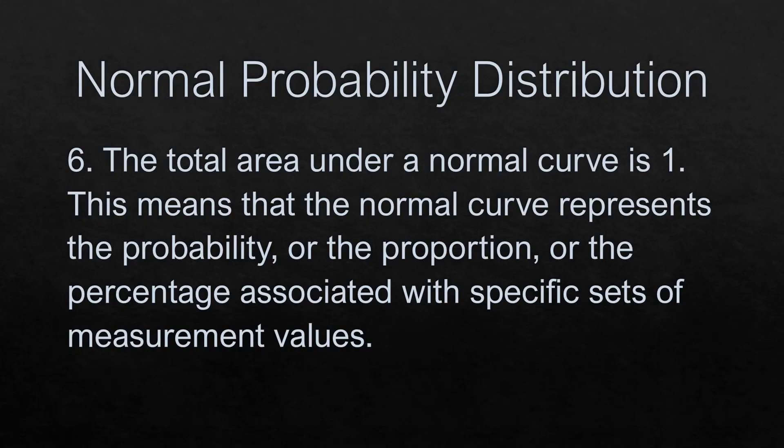And the last characteristic, the total area under a normal curve is 1. This means that the normal curve represents the probability or the proportion for the percentage associated with specific sets of measurement values.